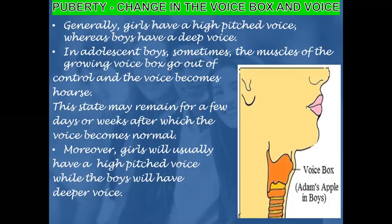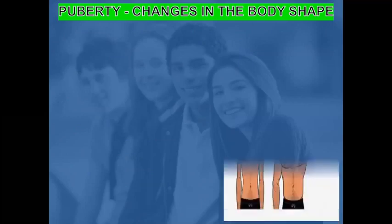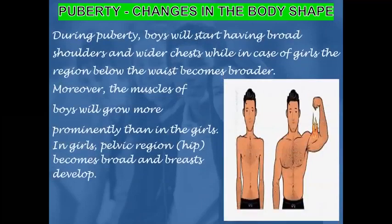Generally, girls have a high-pitched, sweet voice, while boys have a deeper voice. During puberty, boys will start having broad shoulders and wider chests, while in the case of girls, the region below the waist becomes broader. The muscles of boys grow more prominently than in girls. In girls, the pelvic region or hip portion becomes broad and the breasts develop.